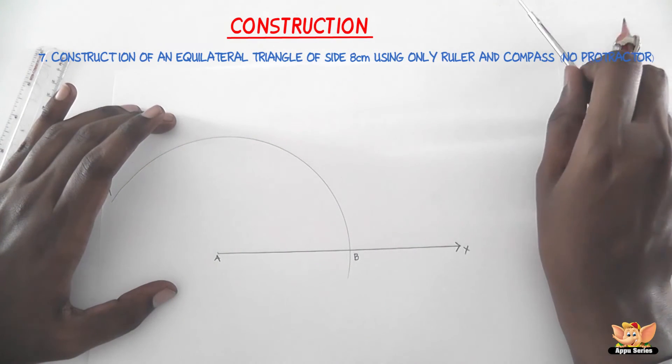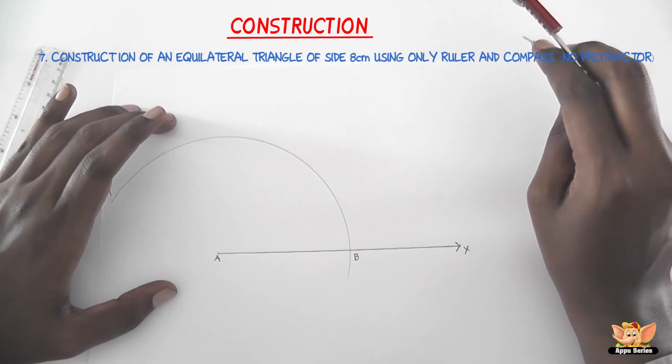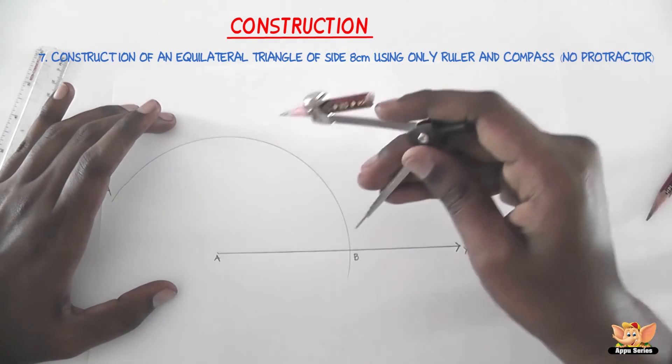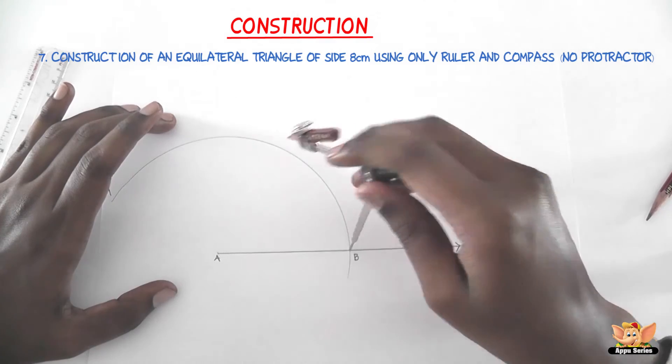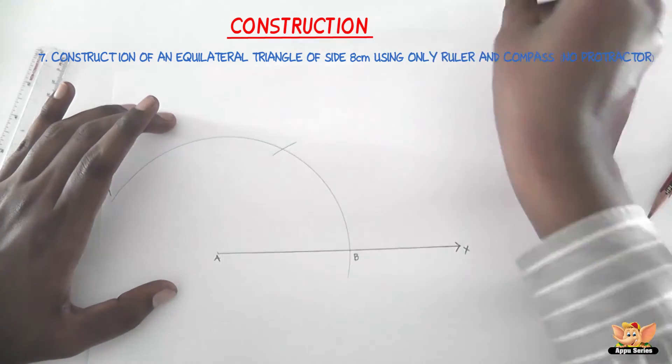So the third step is with center B and the same radius, draw an arc, cutting the arc By at C. So with B as center, let us cut it at C.